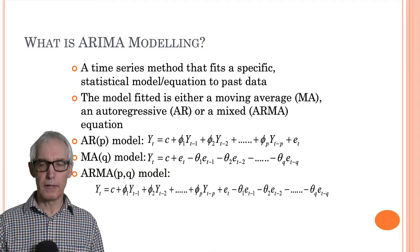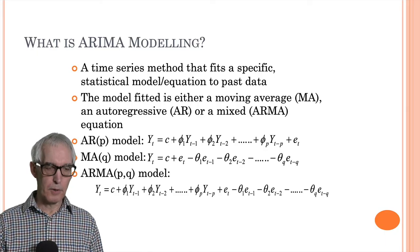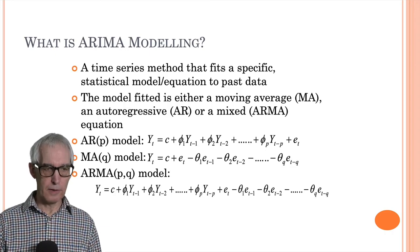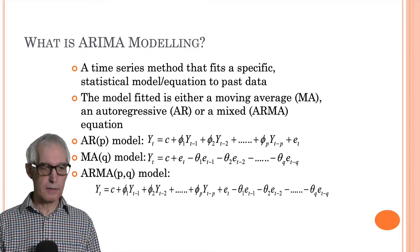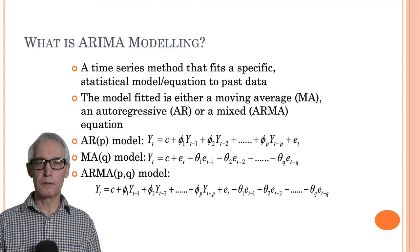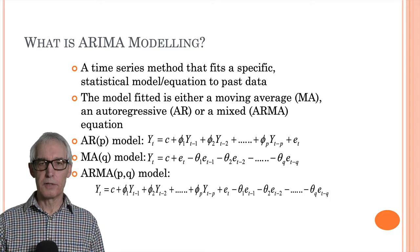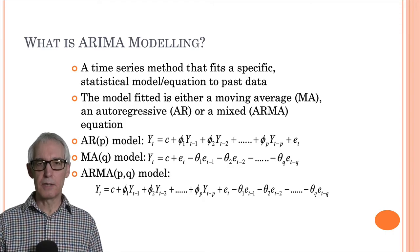An autoregressive model, as the name tells you, models the current value of the variable on past values. The current value yt is linearly related to the last period value yt minus one, two periods back yt minus two, and so on as far as p periods back — hence an AR(p) model. You need to estimate the coefficients phi one to phi p and the constant. It's not an exact fit because there'll be some random error, giving us the disturbance term et.